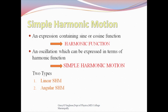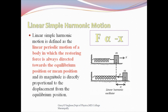There are two types: linear simple harmonic and angular simple harmonic. Linear simple harmonic motion is defined as a linear periodic motion of a body in which the restoring force is always directed towards the equilibrium position, and its magnitude is directly proportional to the displacement from the equilibrium position. Looking at the figure, the first figure shows a mass M attached to a spring of negligible mass in equilibrium state. The mass is then displaced through a distance X, and the restoring force acts towards the equilibrium position. So F is proportional to minus X.